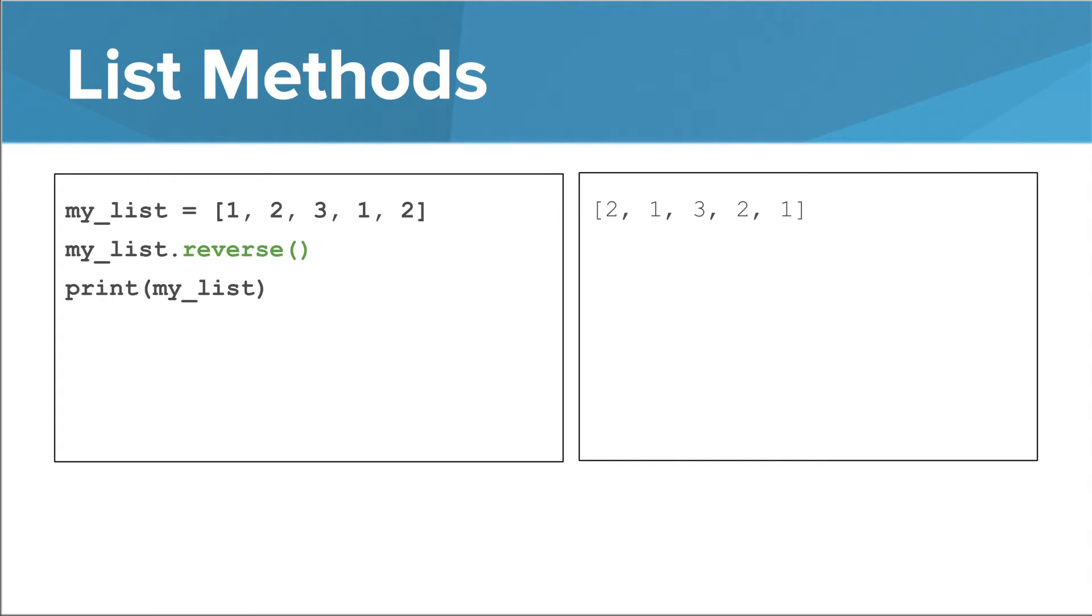Here's reverse. It just changes the list to be in reverse order. Note that this is not reverse sorted order. If you want to put your list in reverse sorted order, you can do something like this. Sort it first, and then put it in reverse order. Finally, you can use the remove method to remove something. Note that it just removes the first instance of that thing. So in this case, it only removes the first instance of the number two. The second instance of the number two, right at the end of the list, stays put.